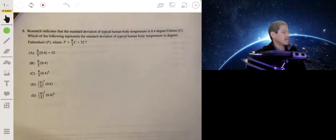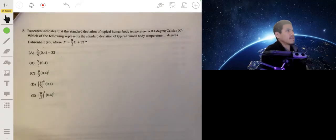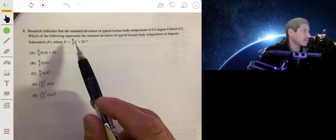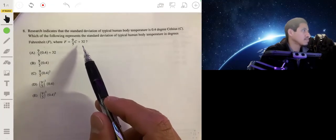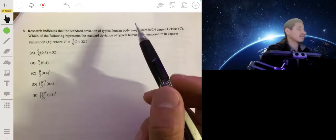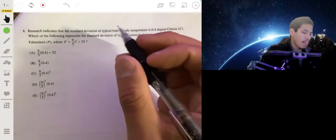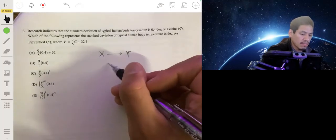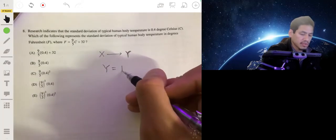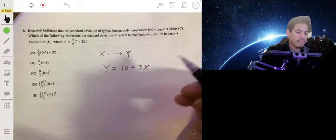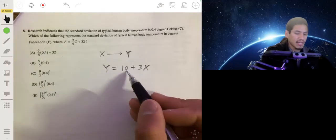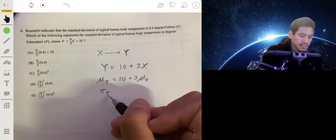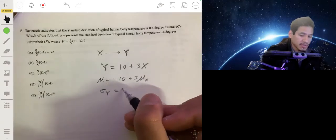Research indicates that the standard deviation of typical human body temperature is 0.4 degrees Celsius. Which of the following references the standard deviation of typical human body temperature in degrees Fahrenheit? Fahrenheit is given as 9/5 times C plus 32. Now this is an example of transforming random variables. When you have a variable that you're changing from, let's say from variable x to y, and y equals 10 plus 3x, if you want to find the mean of y, that value would be 10 plus 3 times the mean of x.